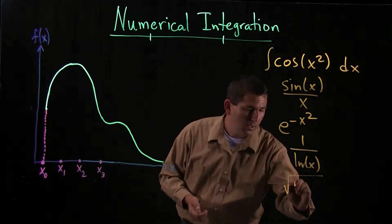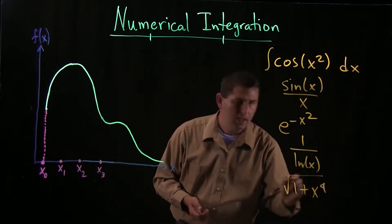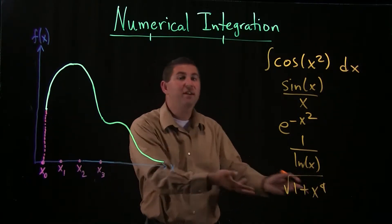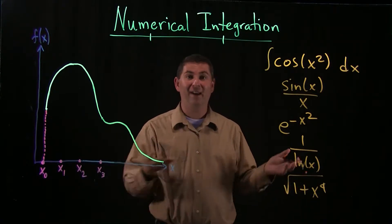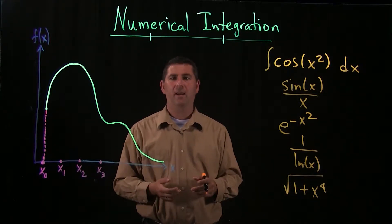And say the square root of one plus x to the fourth. Surely you say there must be some trig substitution or something we can do to find an antiderivative. Not going to happen.